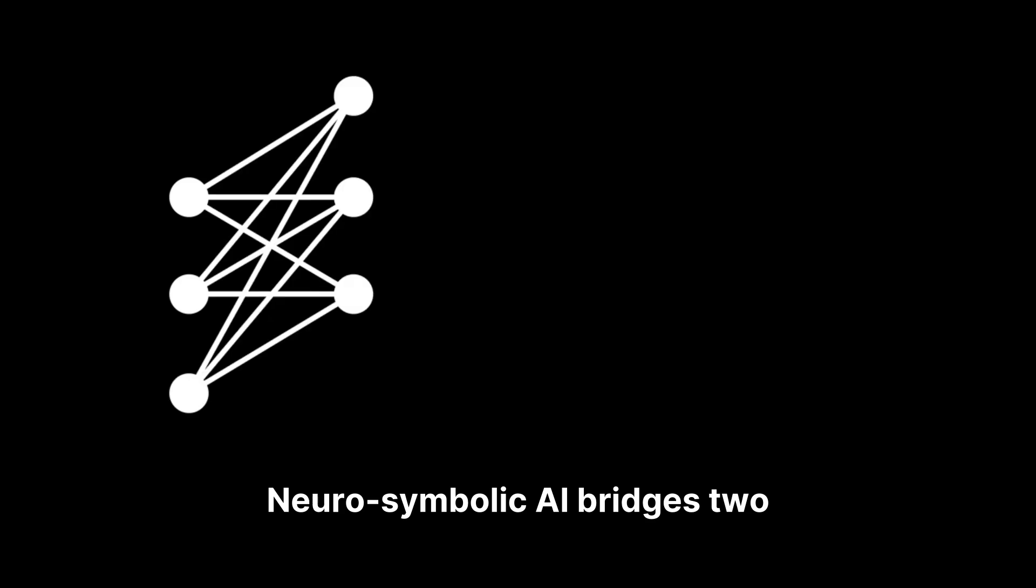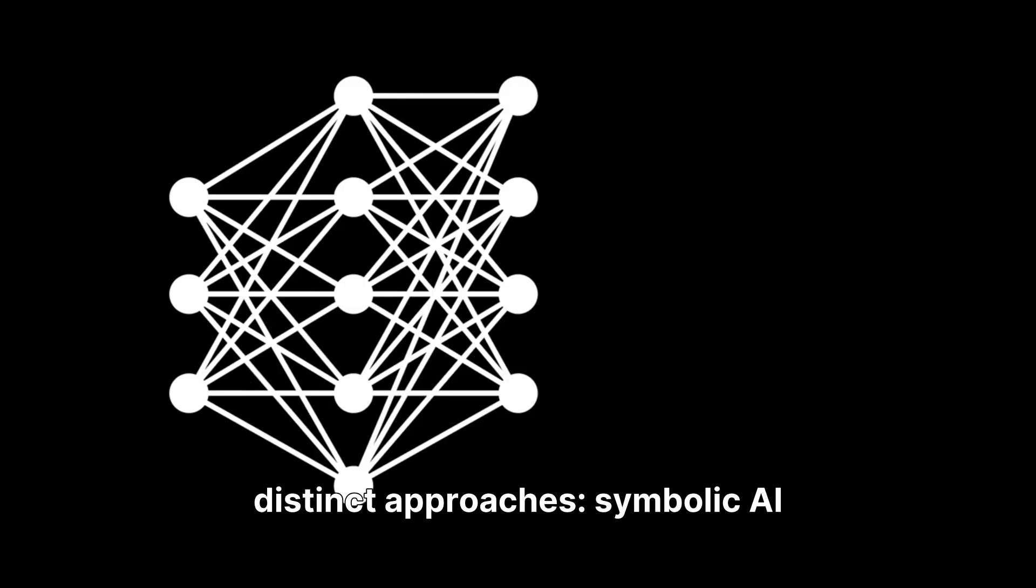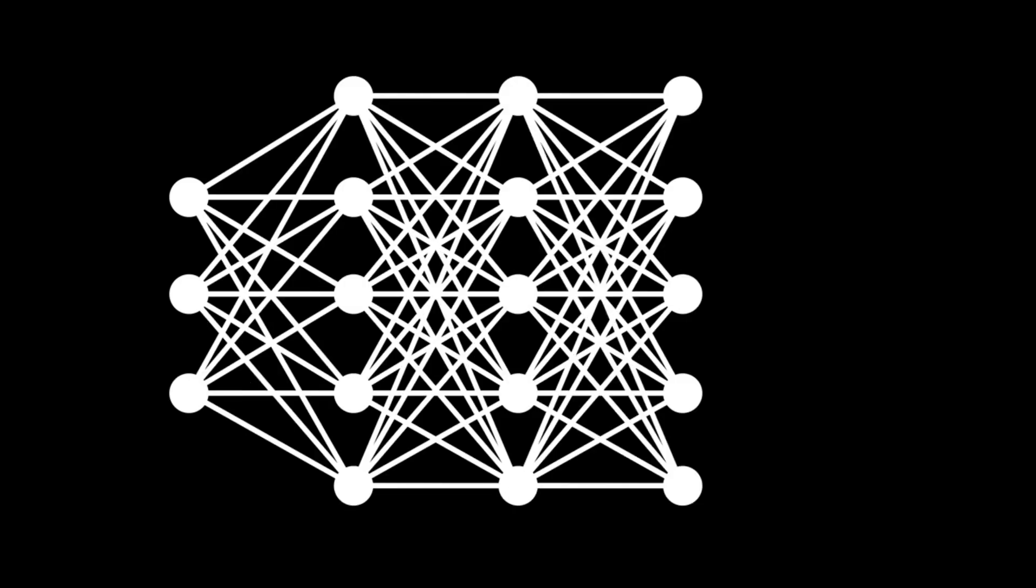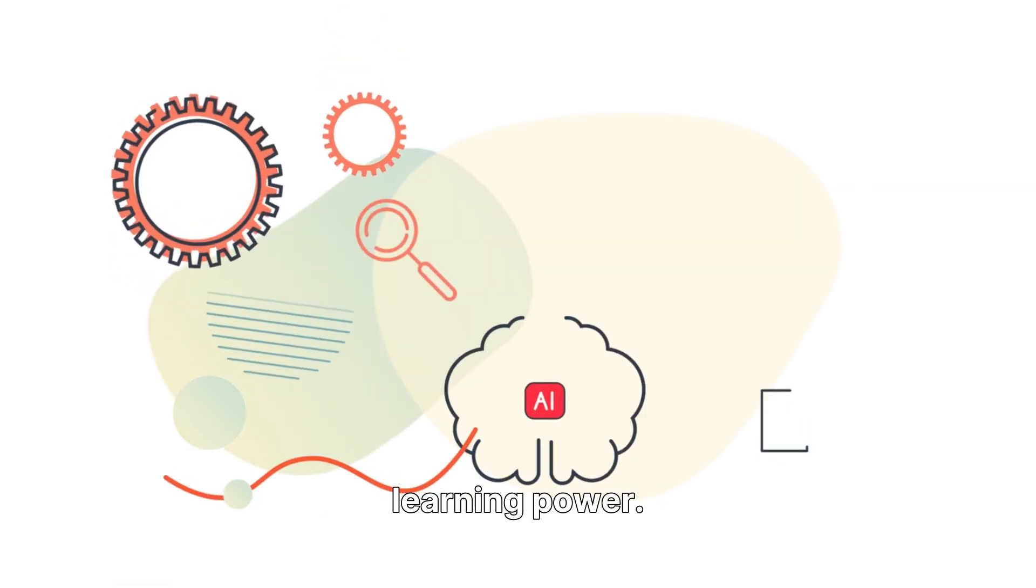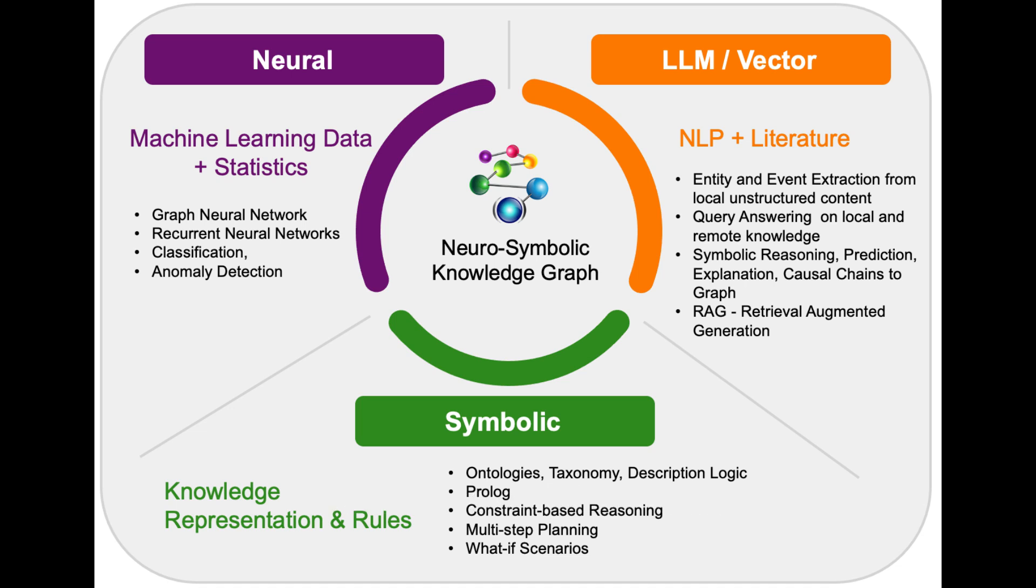Neurosymbolic AI bridges two distinct approaches: symbolic AI and neural networks. This hybrid approach combines structured logic with adaptable learning power. It allows reasoning about complex relationships while learning from data, a capability traditional AI often lacks.